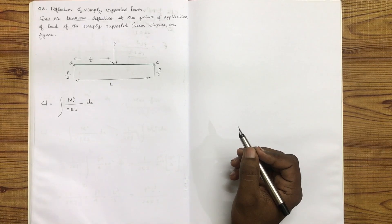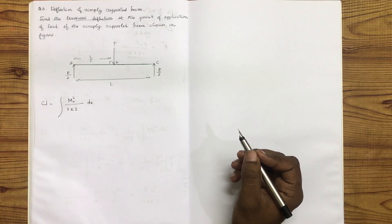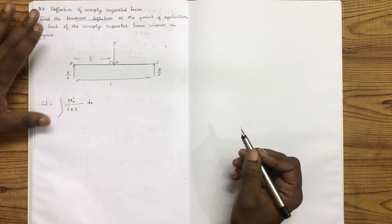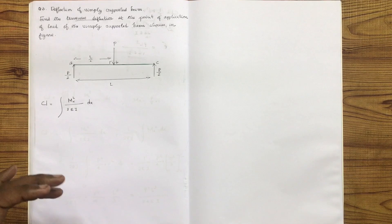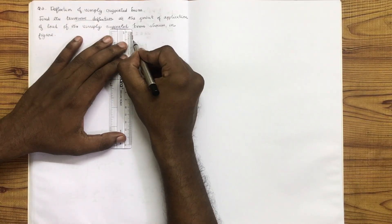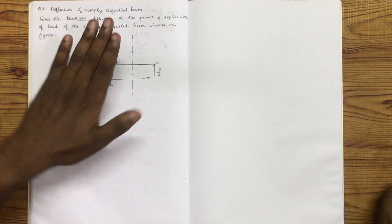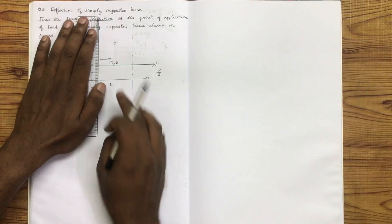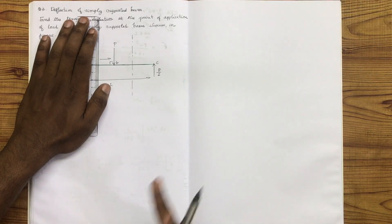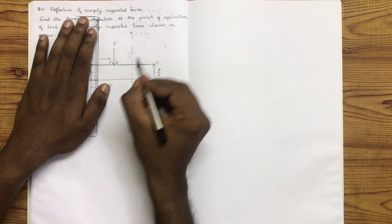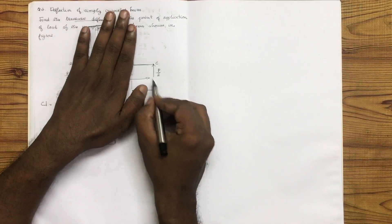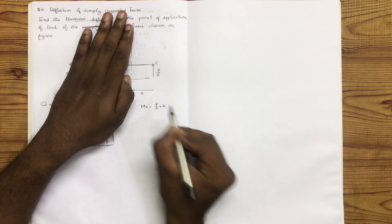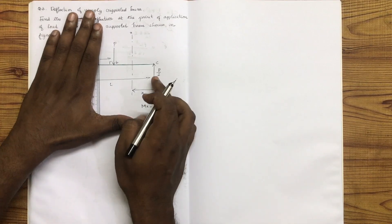The first step is the sum of vertical forces equal to zero. The two reactions are equal. Considering the right side of the beam at a section at distance x, we write the bending moment Mx equal to P by 2 into x. The other side forces are also P by 2.